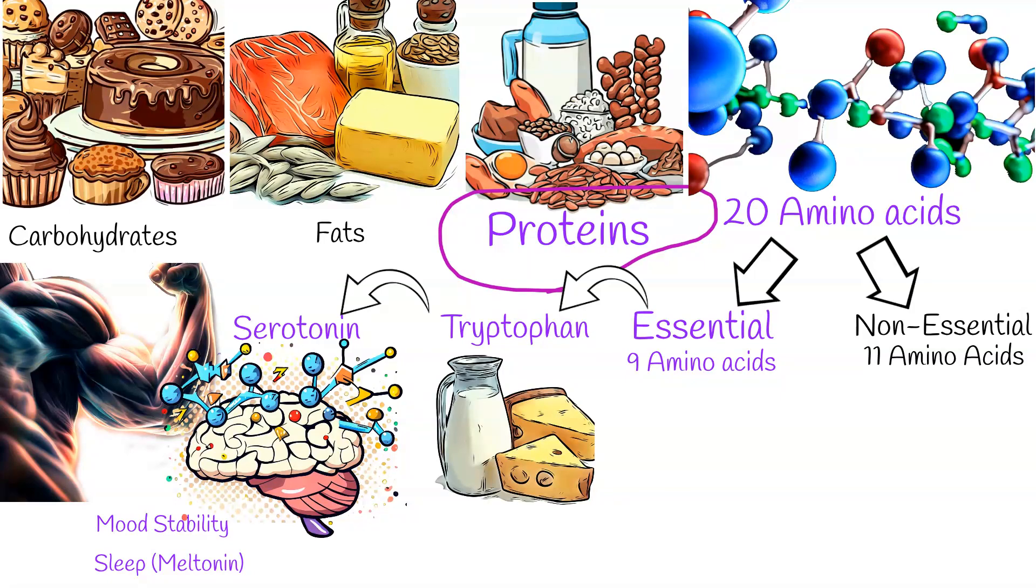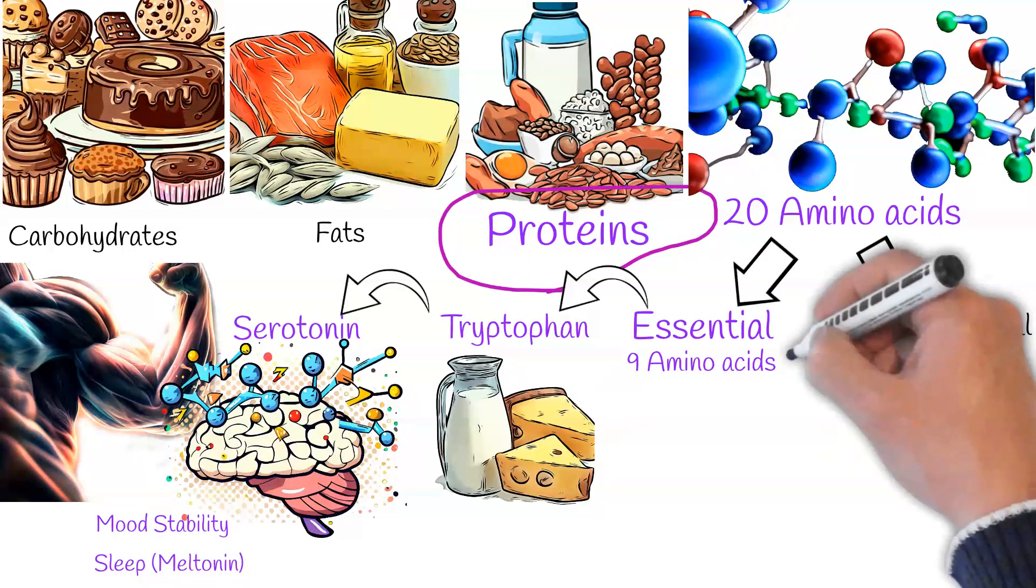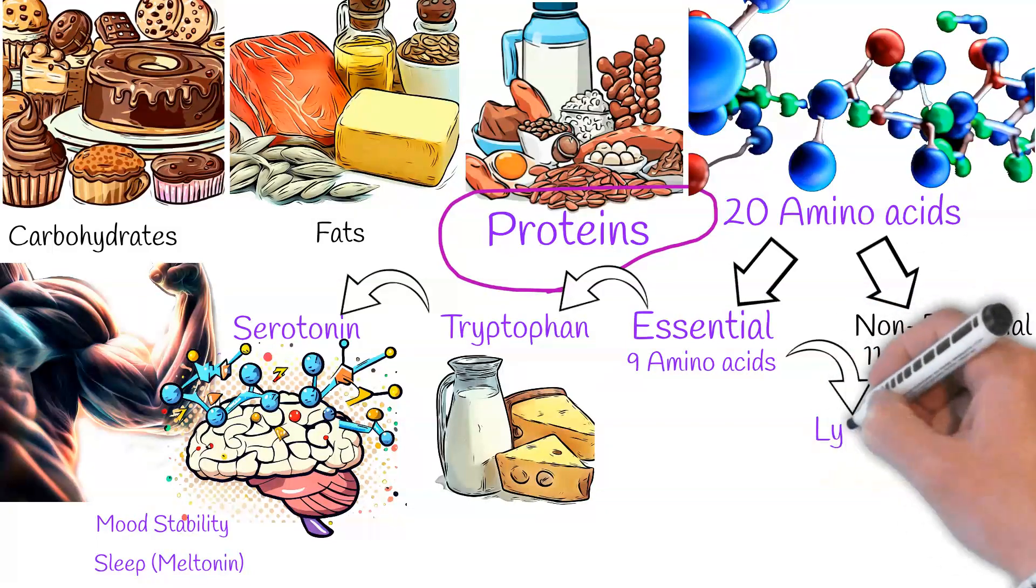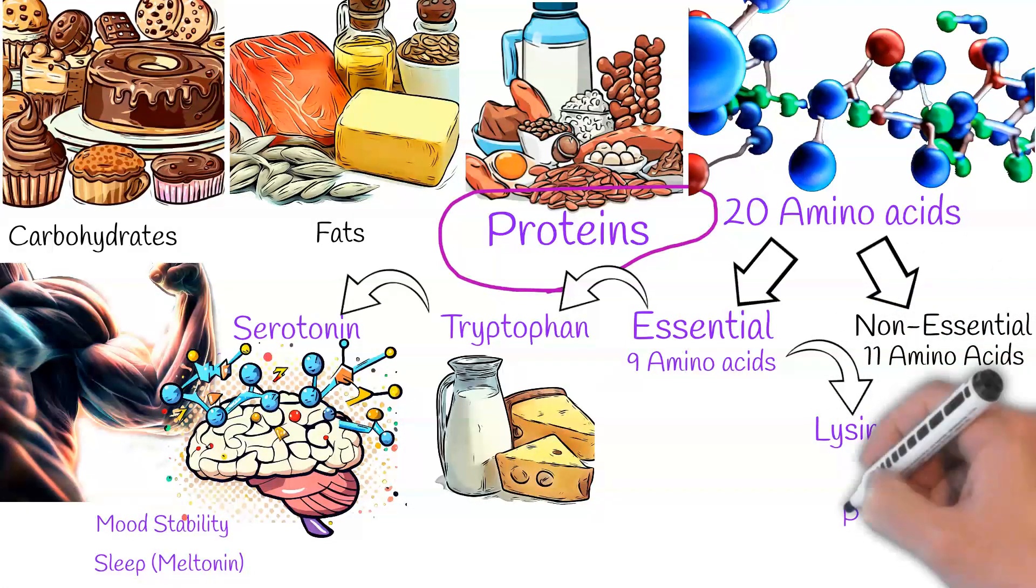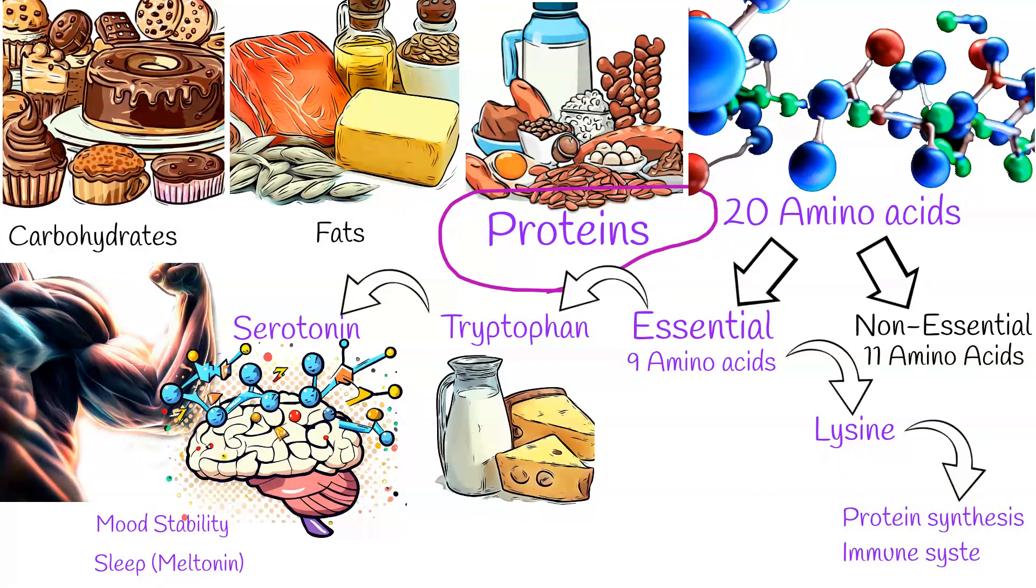Similarly, lysine is another essential amino acid vital for protein synthesis and immune system functioning. Beyond these, amino acids are foundational for muscle and hormone development, neurotransmitter synthesis, and bolstering immune system performance.